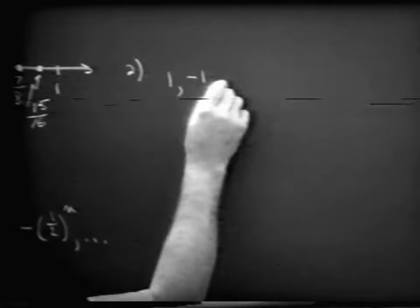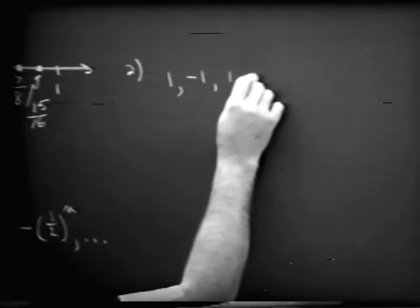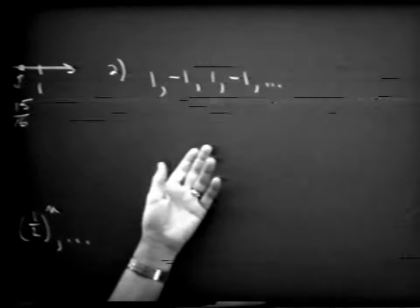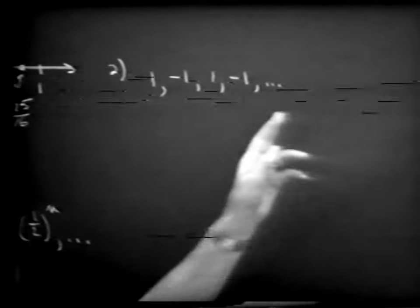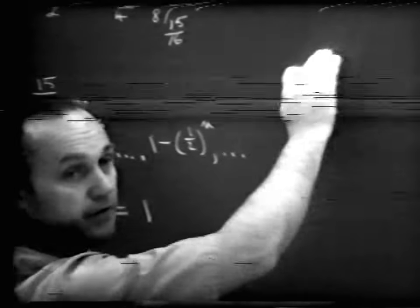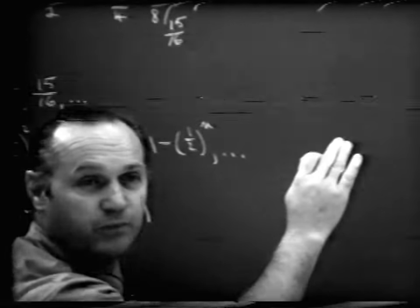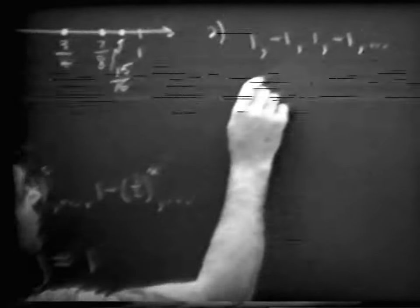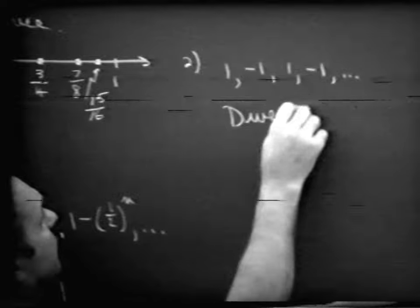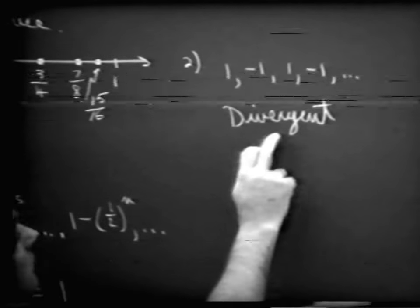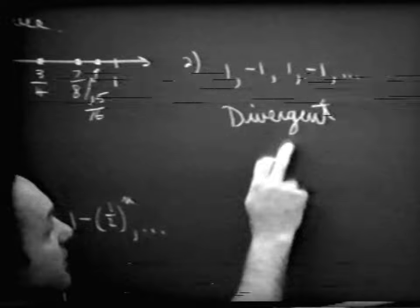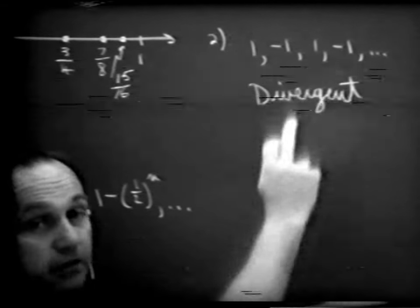Let's look at the sequence: one, negative one, one, negative one, and so on. Just looking at this sequence, do you think that it has a limit? As n goes on forever, is there some number that this sequence is approaching? Is it getting closer and closer to some number? No — it's just jumping back and forth between one and negative one. This sequence does not have a limit, and the word that we use to describe that is a divergent sequence.